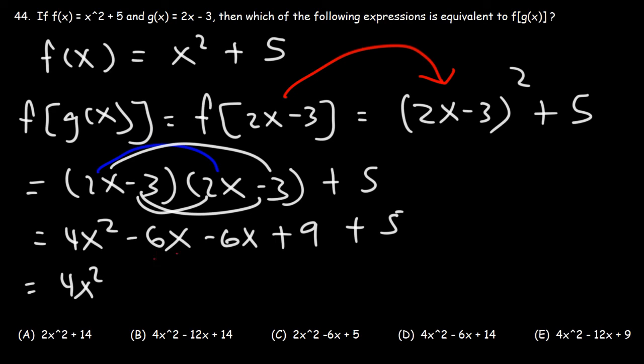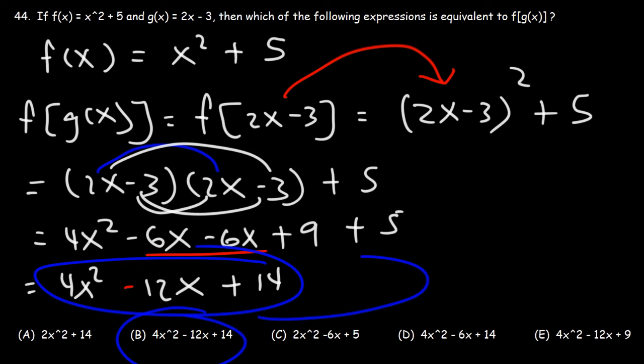Now we can combine these two terms. That's going to be negative 12x. And 9 plus 5 is 14. So the answer is 4x squared minus 12x plus 14, which is answer choice B.